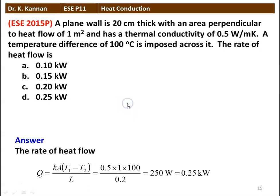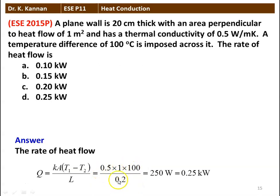The answer: the rate of heat flow Q = K·A·(T1 - T2) / L. Substituting numerical values: 0.5 × 1 × 100 / 0.2 = 250 watts, which is 0.25 kilowatt. The answer is 0.25 kilowatt.